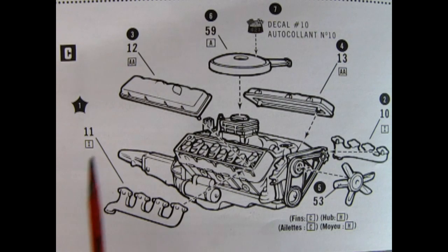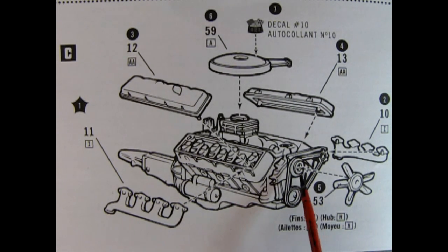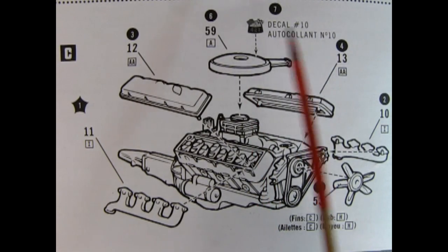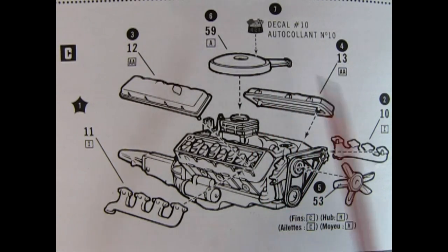Step C completes our engine with our valve covers getting glued in place on the cylinder heads. The exhaust manifolds also being glued to the lower side of the cylinder heads, our fan going into the top pulley, our air cleaner going into the carburetor, and the decal being installed on top of the air cleaner.